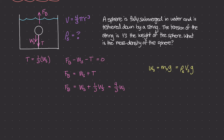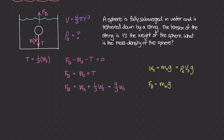What about the buoyant force F sub b? The buoyant force is the weight of the liquid displaced, which equals the mass of the water times gravity. I'd suggest watching the last two videos where we derive why F sub b equals the mass of the fluid displaced times gravity. So F sub b equals the mass density of the water times the volume of water displaced times gravity.